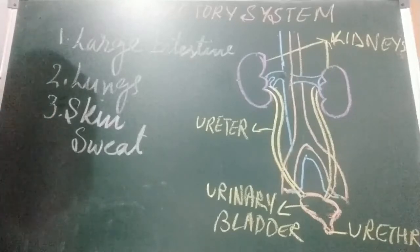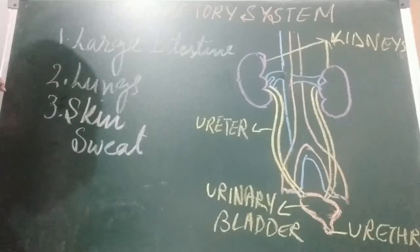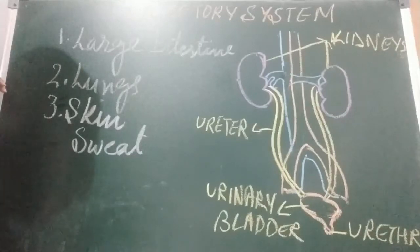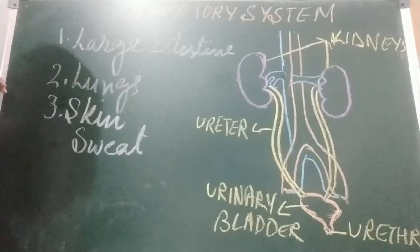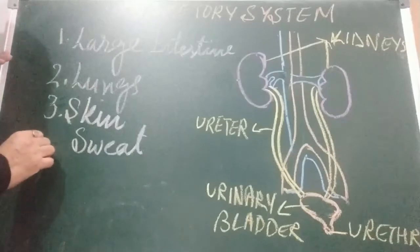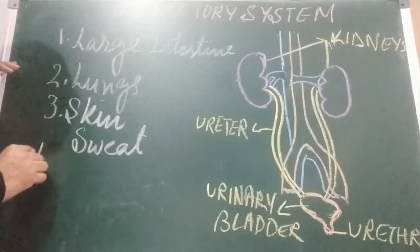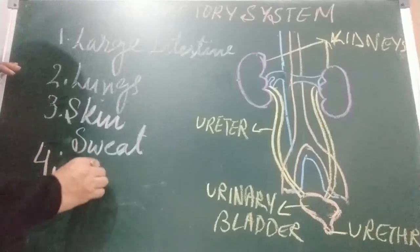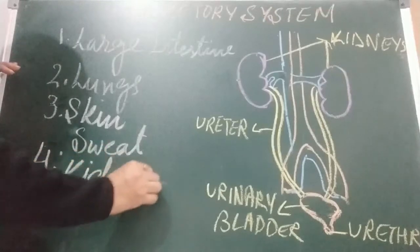Sweating is very important in two ways. First, it helps to remove excess water, some salts, and urea as liquid waste from the body. Second, it maintains our body temperature — it helps keep our body cool during summers. In summers we sweat a lot, so it keeps our body cool. Now, number four is the kidney.